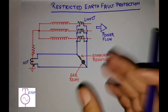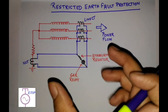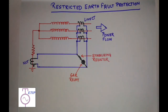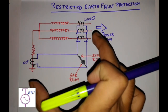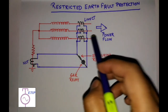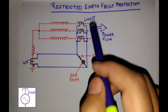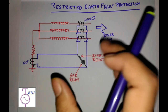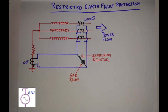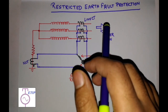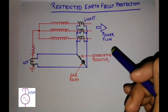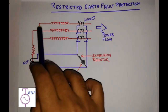As the name suggests, restricted earth fault protection restricts the detection of faults within a specific range — a specific zone. It is a zone-specific indicator, meaning this system will work only if the earth fault has occurred within a specific zone, and not for faults outside that zone. This protection is widely used to detect earth faults inside a machine, transformer, or generator.